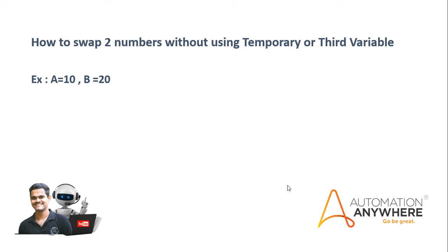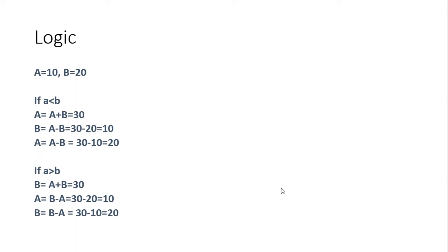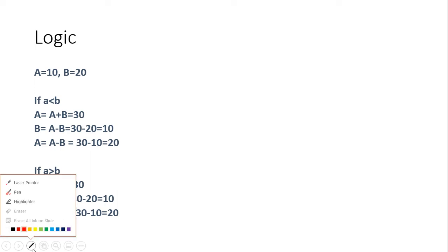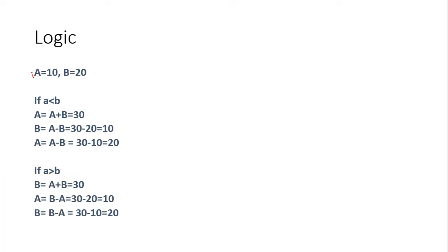Before going to the Automation Anywhere workbench, let's discuss the logic to get the output without creating any other variable. The logic is very simple. If we have a equals 10 and b equals 20, we have two cases: a is smaller than b, and a is greater than b. If we implement both, our bot is dynamic. For the case where a is smaller than b, the first step is a equals a plus b, so a becomes 30.